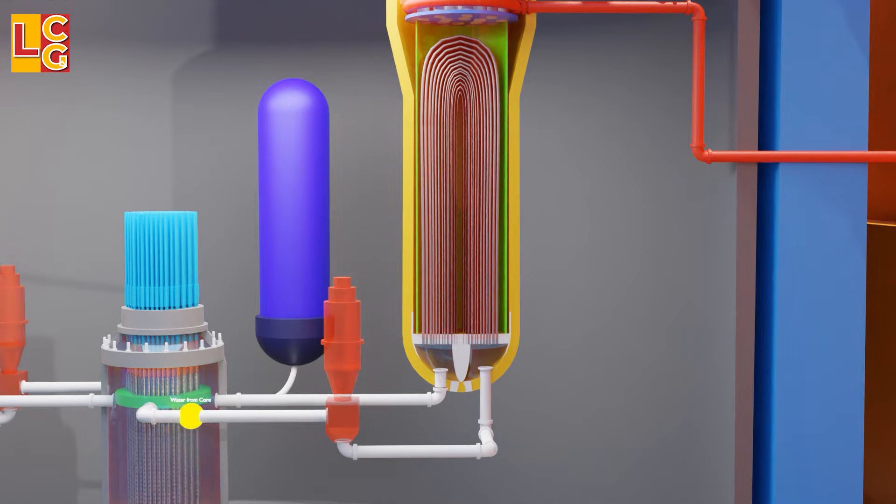As you can see, the water inside the steam generator does not really mix with the water from the reactor core. The water from the reactor vessel is cooled indirectly from the tube bundles.